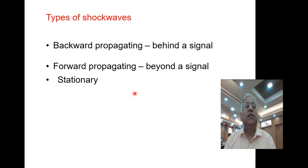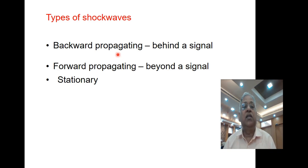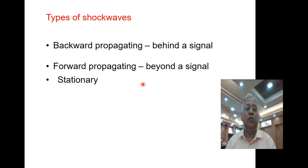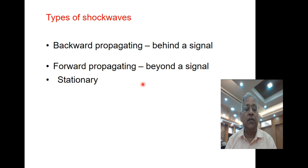Shockwaves can travel either in the forward direction or in the backward direction. There are three types of shockwaves. A backward propagating shockwave generally occurs behind a signal or behind an accident. A forward propagating shockwave occurs beyond a signal or after the incident is cleared. It can also be stationary — when two streams having the same flow value but different densities join together, or when two streams with different flow values but the same density meet, a stationary shockwave is formed.